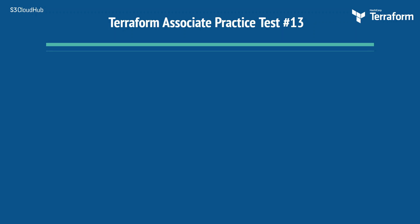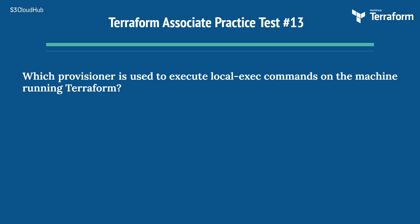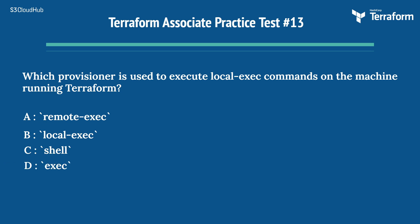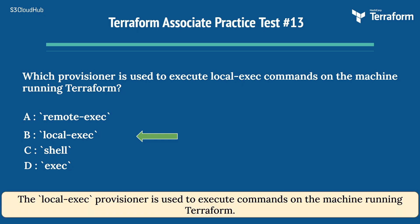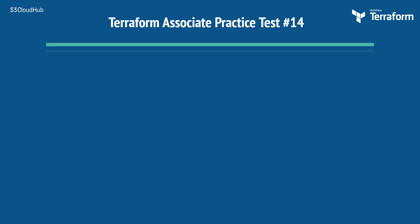The thirteenth question: which provisioner is used to execute local exec commands on the machine running Terraform? Options are: A) remote exec, B) local exec, C) shell, D) exec. The right answer is Option B, local exec. The local exec provisioner is used to execute commands on the machine running Terraform.